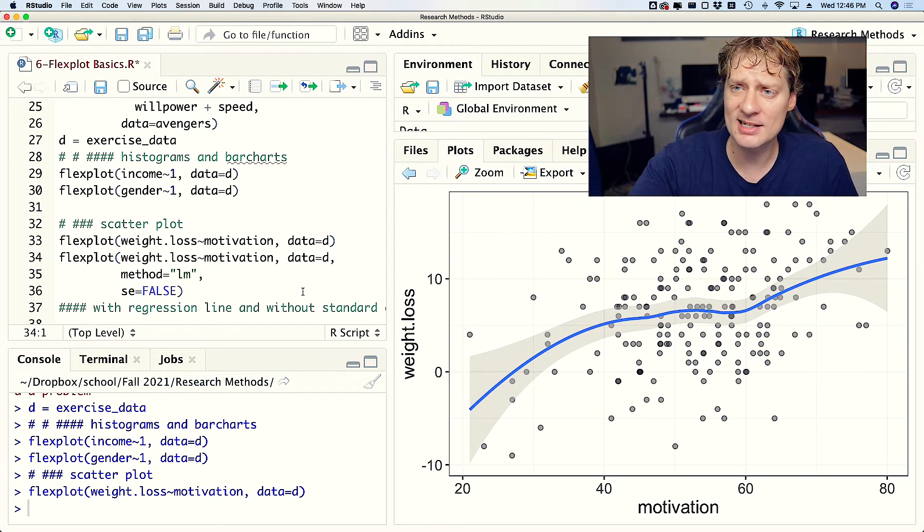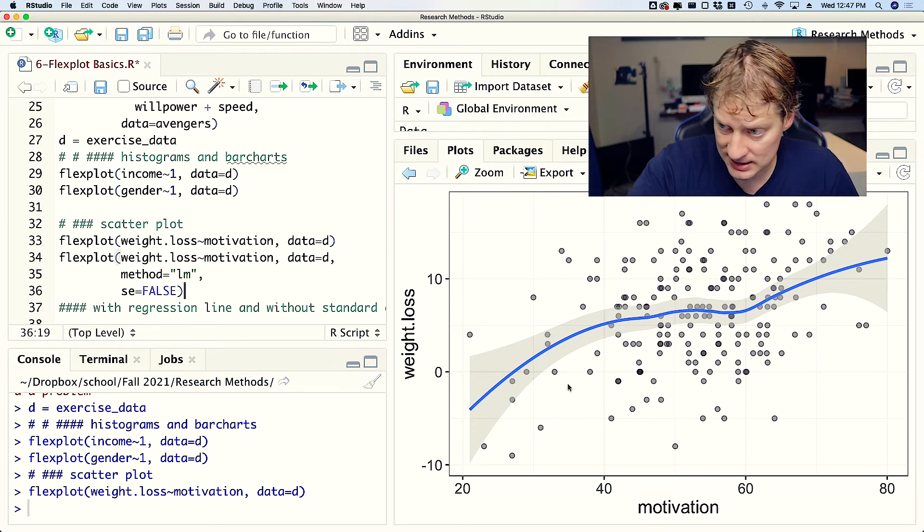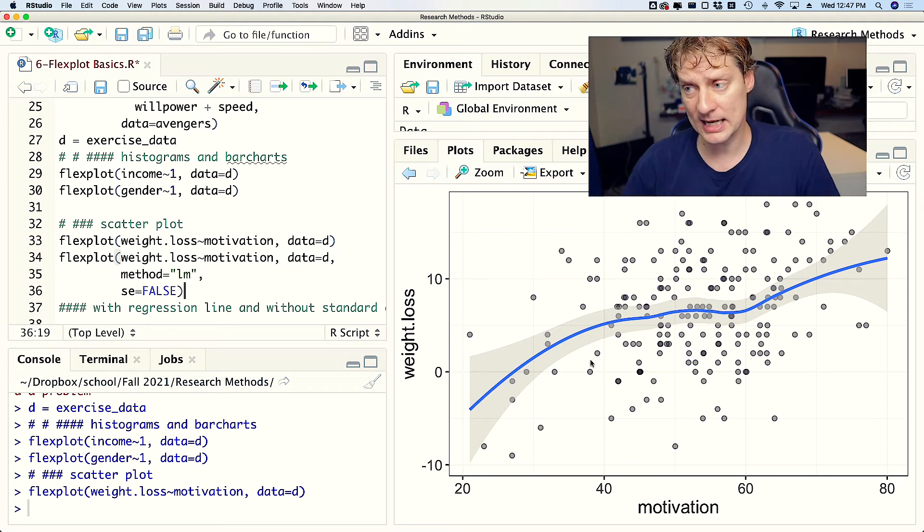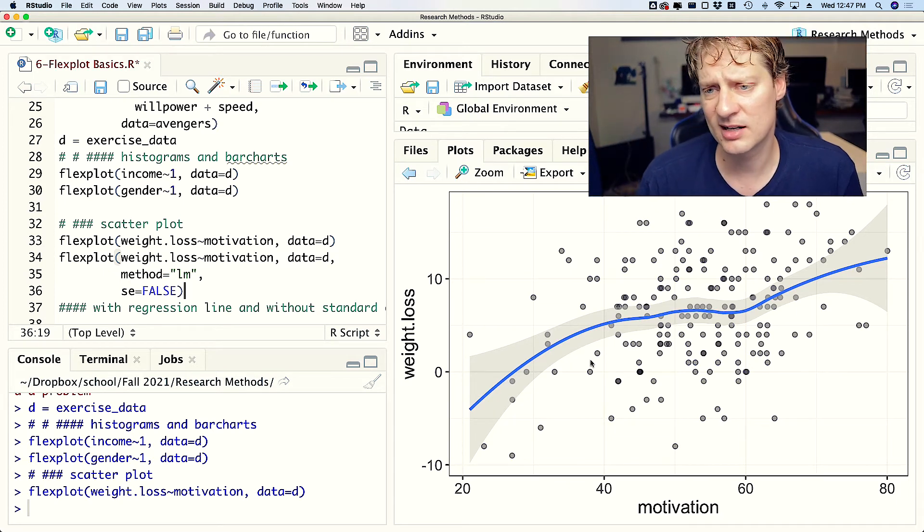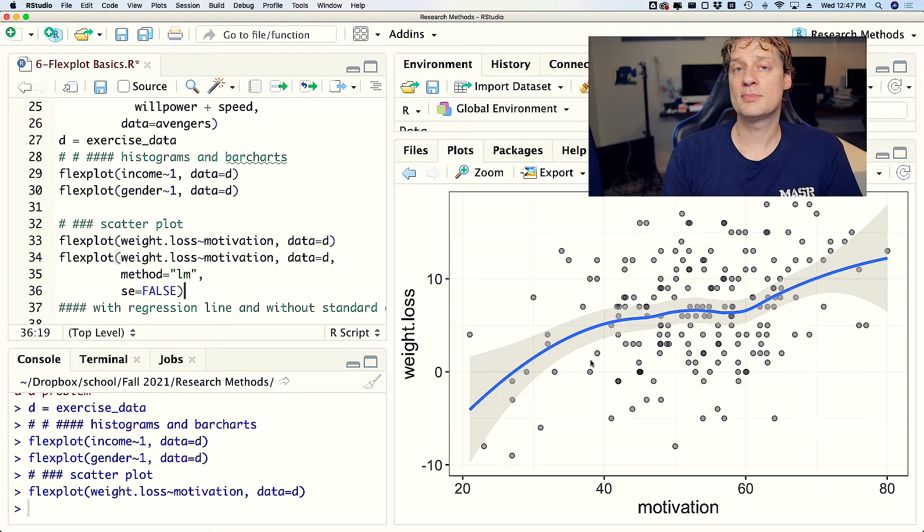If you wanted a regression line instead, you can say method equals LM. Another argument you could add is SE equals false. So in this plot here, we've got a band surrounding that line, and maybe you don't want that band. If you do, then you just say hey Flexplot, SE equals false, and Flexplot will say I gotcha, and then it will take away the standard error band.